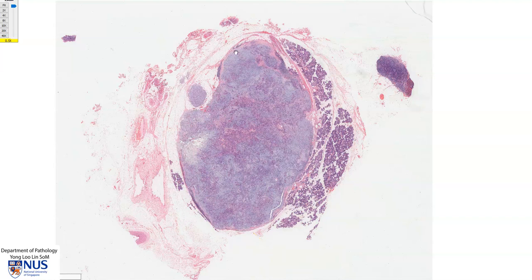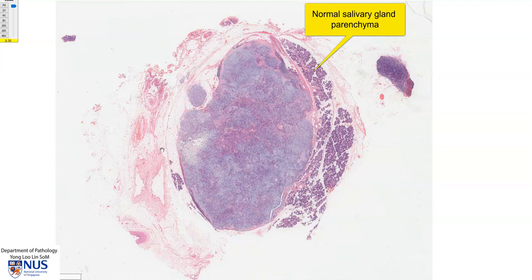Adjacent to this nodule on the right side, we can see some lobules of normal salivary gland parenchyma, and then in other areas as I'm outlining here, we can see a lot of adipose tissue. If you're wondering what this is, this is a small reactive lymph node.